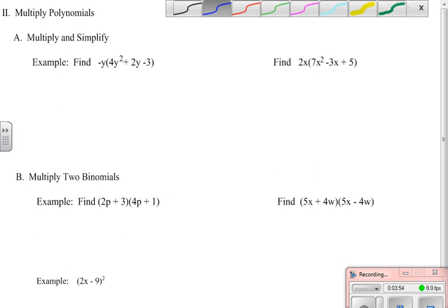Now, multiplying is also a fairly simple process. This first example is a single term outside of a quantity. So this is our distributive property, no matter how many terms. Again, I'm going to change this to add the opposite. So I have negative y times 4y squared is negative 4y cubed. Negative y times positive 2y is negative 2y squared. And negative y times negative 3 is positive 3y.